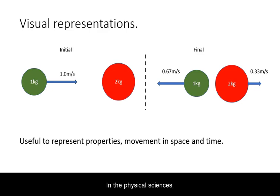In the physical sciences, a diagram is often a visual representation of the properties of objects and their movement through space and time.